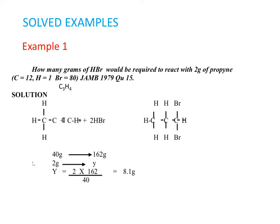Solution. This is the formula for propyne: C≡C-H. It reacts with 2 moles of hydrogen bromide to give dibromopropene, which has 2 bromine atoms.